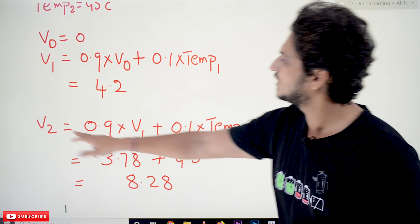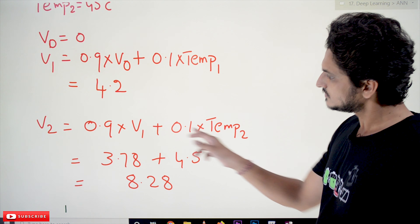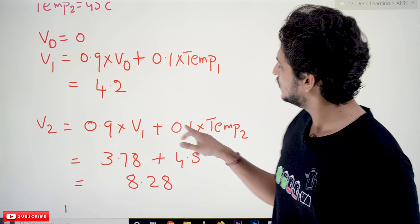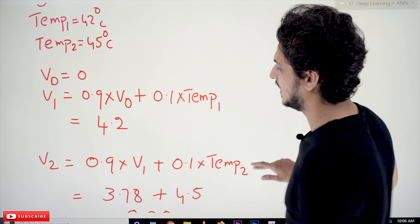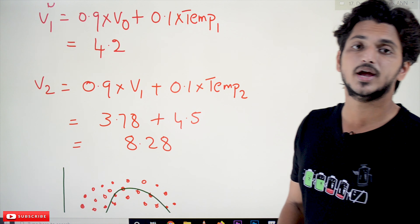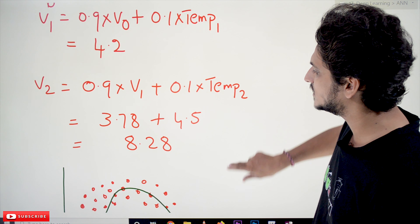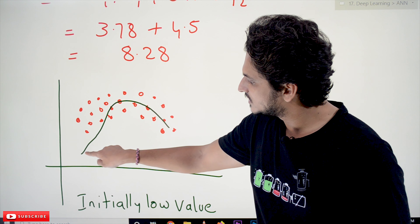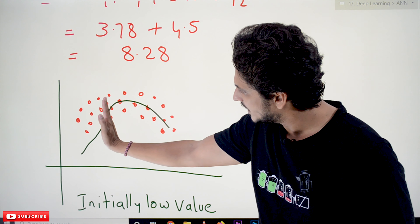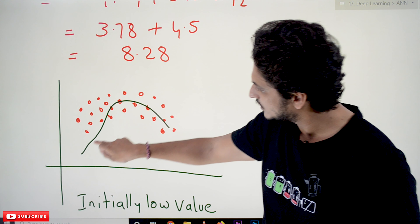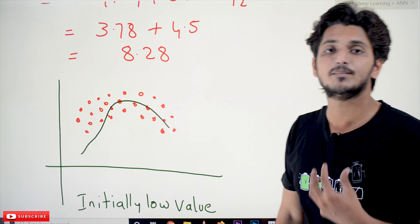Let's calculate the next one. V2 = 0.9 * V1 + 0.1 * Temp2 = 0.9 * 4.2 + 0.1 * 45 = 8.28. When you plot the graph of the Exponential Weighted Average with these equations, initially we get a small value and slowly it converges to the average value. This is the plot we get — initially low, then gradually converging.